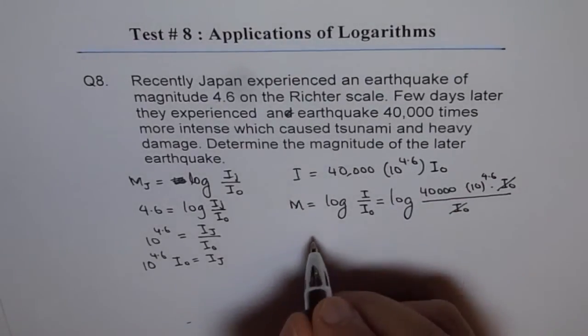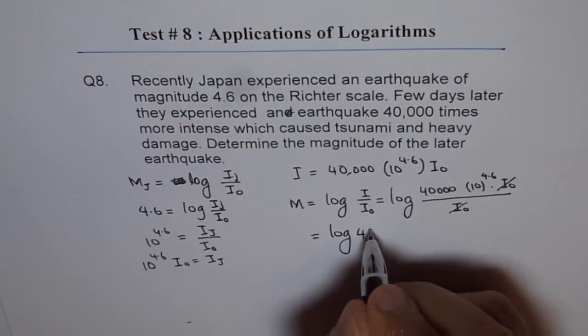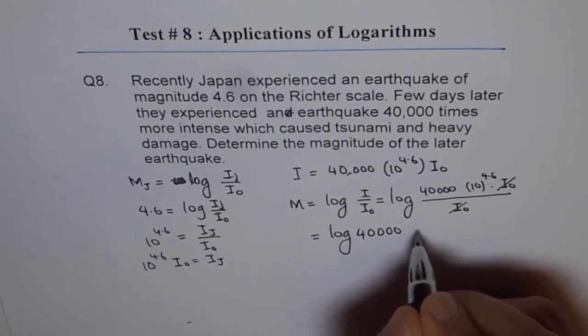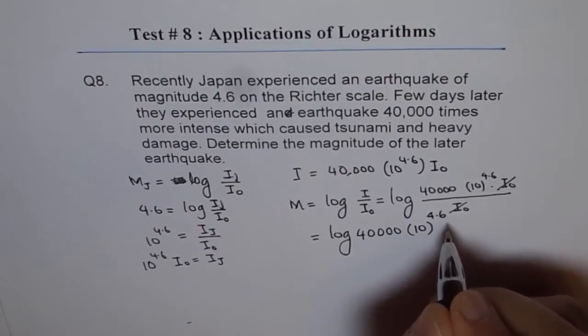So we get log of 40,000 times 10 to the power of 4.6.